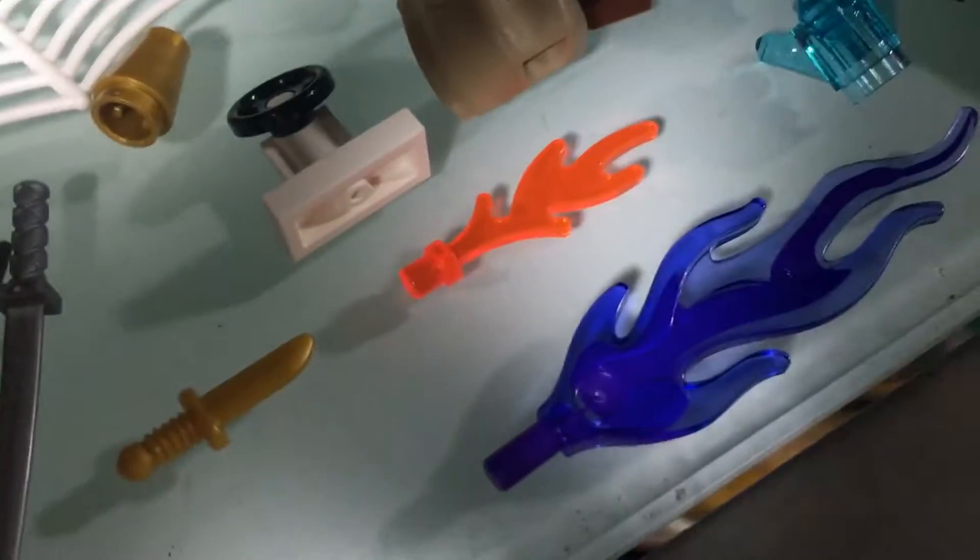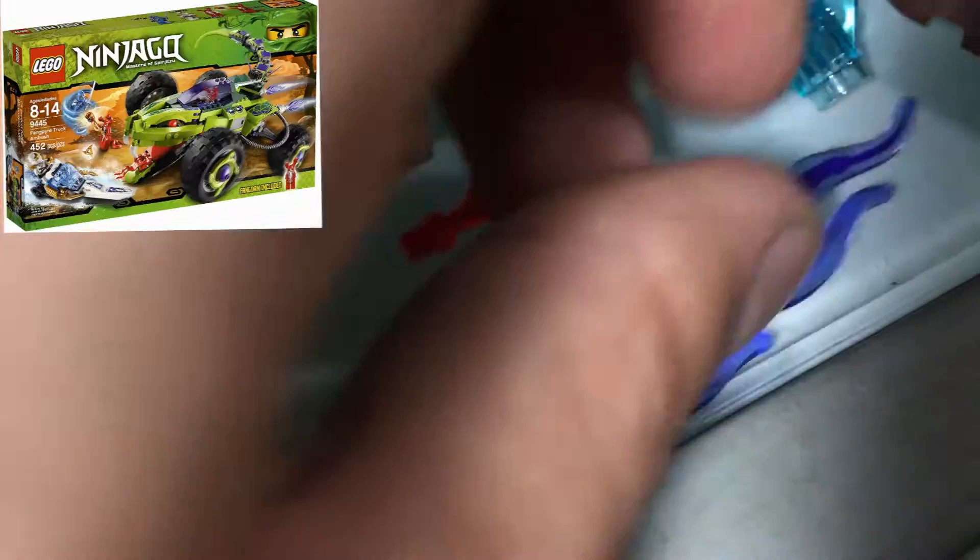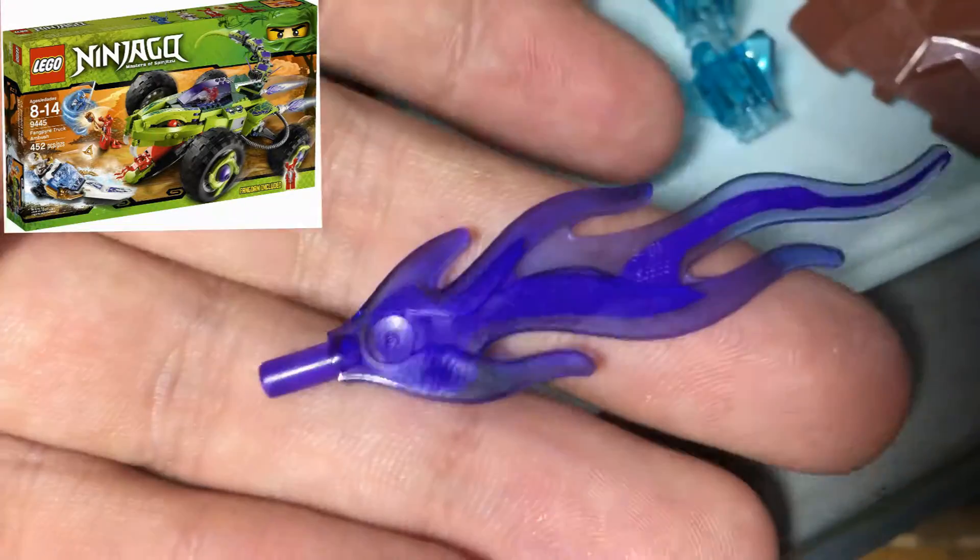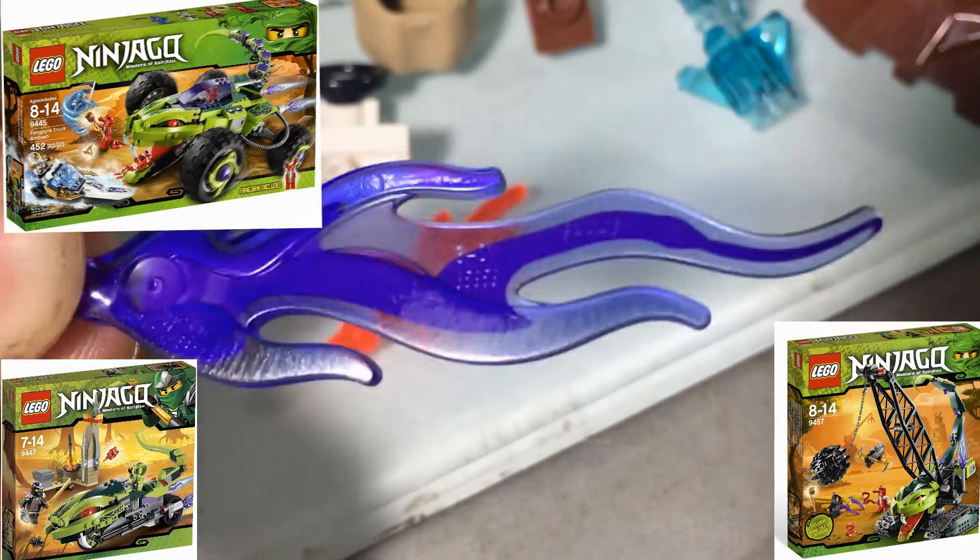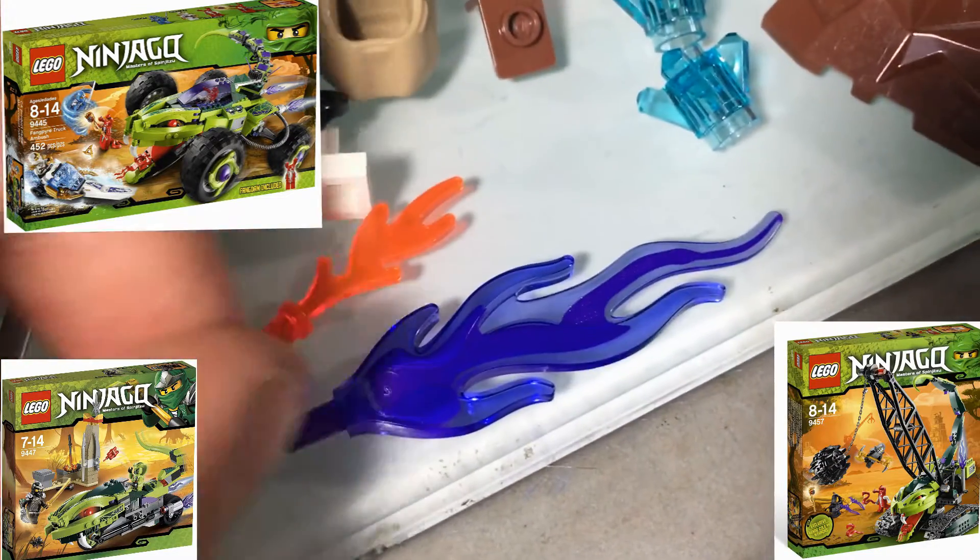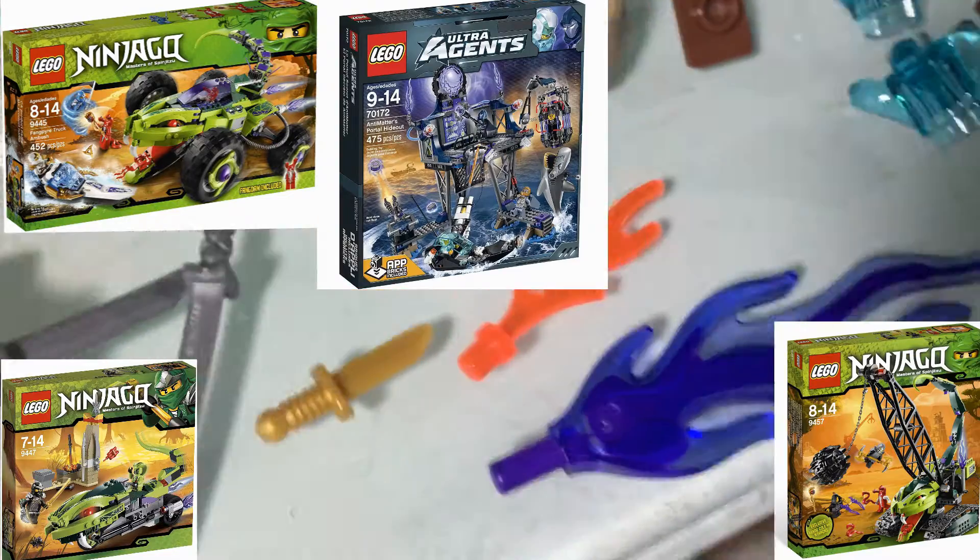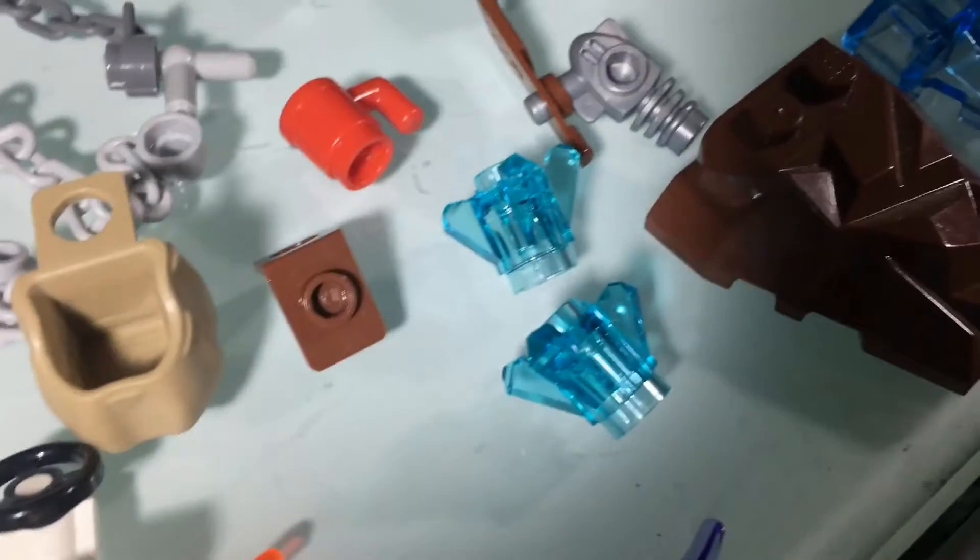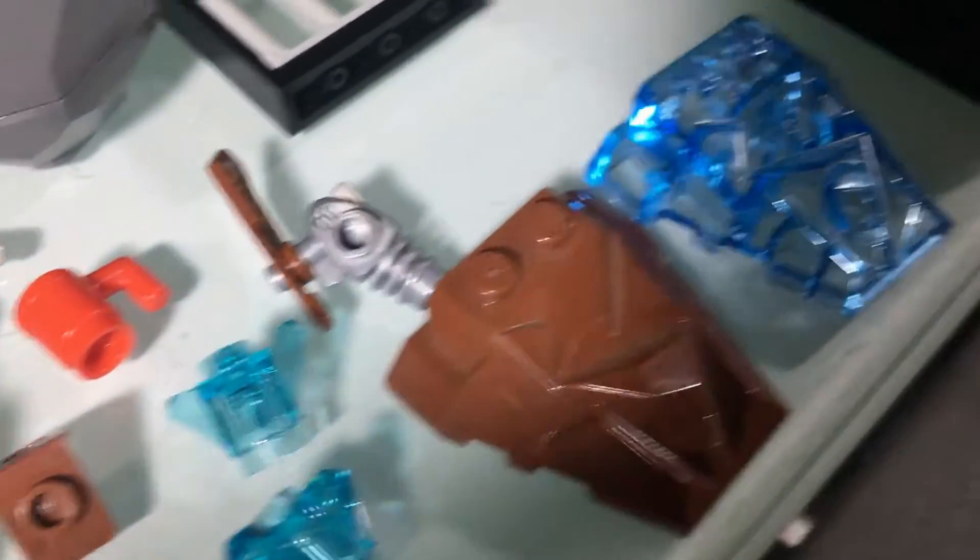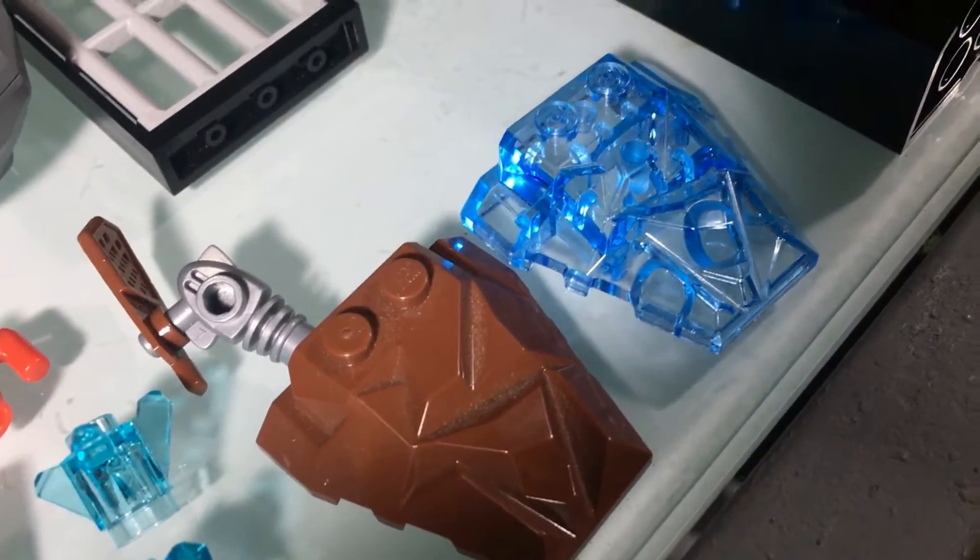These flame pieces are awesome, I haven't gotten this in purple, that is just sick. Must be from Ultra Agents or Elves or something like that. Regular flame piece. The Chima crystals are a standout, I also like these bits I think they're from Ninjago dragons or something, sort of craggly rock bits.